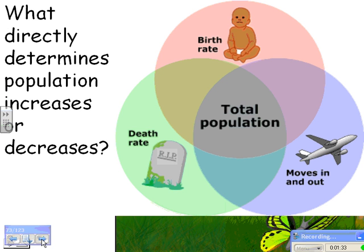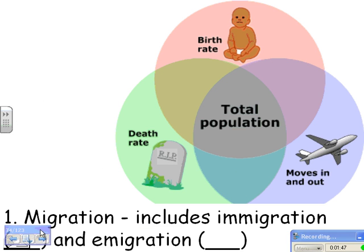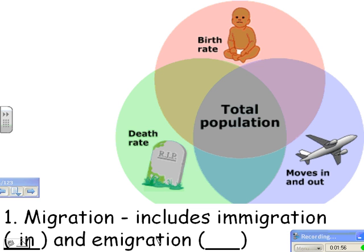So what determines population increases or decreases? We're looking at a few things: birth rate, death rate, and who moves in or out of the area. This applies to any type of organism. The first thing is migration, which means moving around. It includes both immigration, which means moving into an area, and emigration, which means moving out.